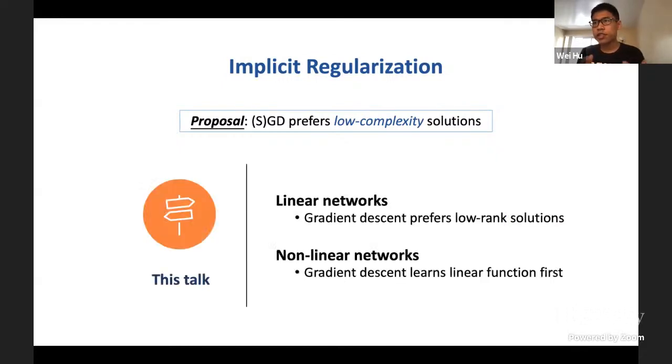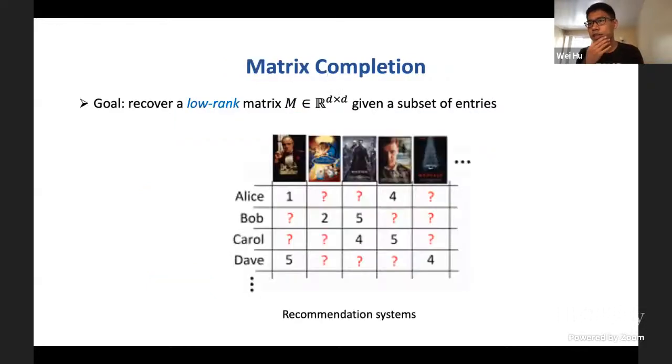I'm going to present two simple deep learning examples where we are able to mathematically characterize the implicit regularization going on there. The first one is for linear networks, and the second is for nonlinear networks. So let me go into the first example. For this example, we will consider this classical problem of matrix completion.